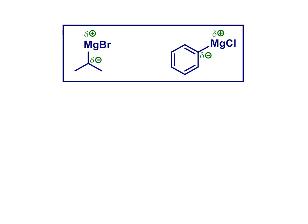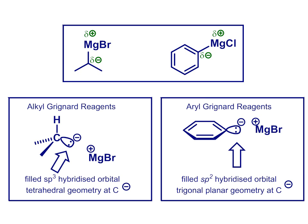Once the Grignard reagent is generated, it is polarized such that there is positive charge density on the magnesium and negative charge density on the carbon. So it reacts as the equivalent of C-, a very reactive nucleophile centered on the carbon. Grignard reagents can be made from a wide variety of alkyl and aryl halides, and there are related organolithium, organozinc, and organocopper compounds, which follow a similar mode of reactivity.